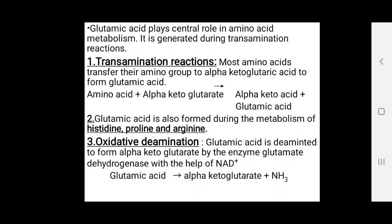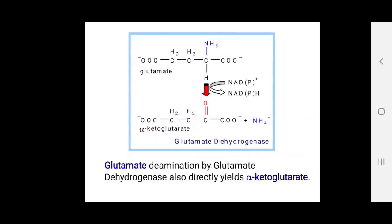In oxidative deamination, glutamic acid is deaminated to form alpha-ketoglutaric acid plus ammonia by the enzyme glutamate dehydrogenase, with the help of NAD+. Glutamate deamination by glutamate dehydrogenase gives alpha-ketoglutaric acid.